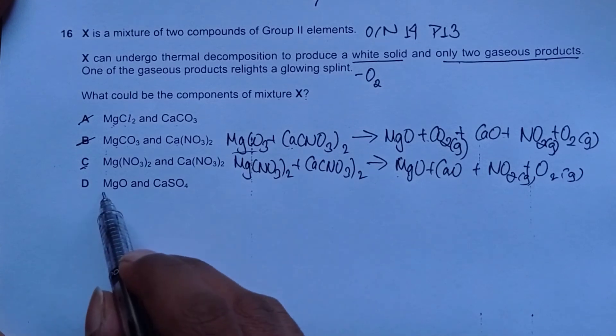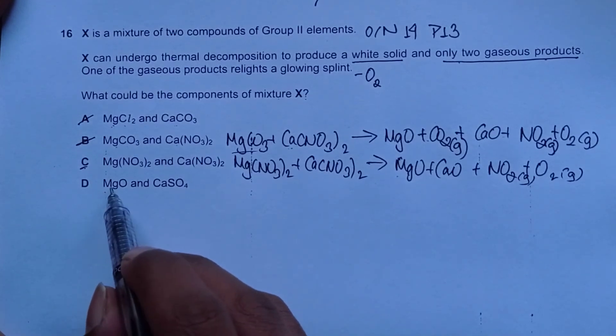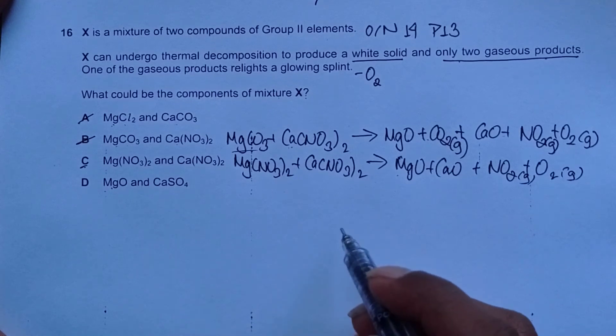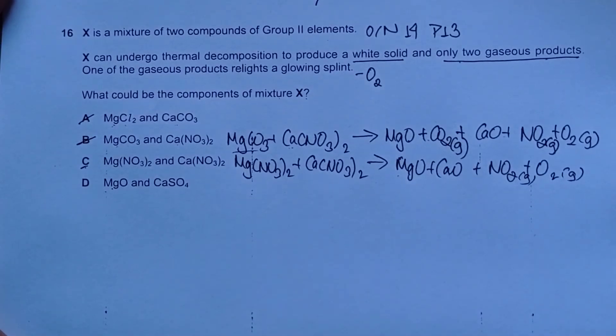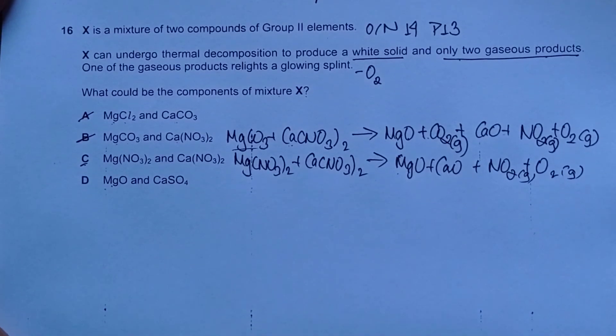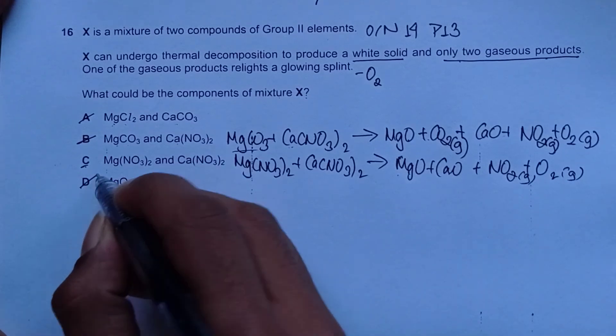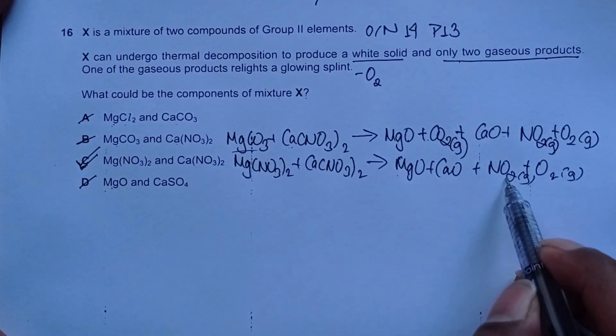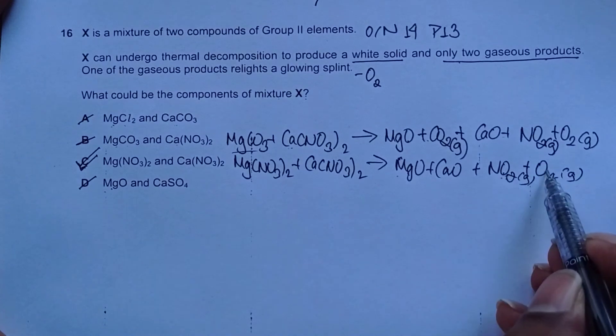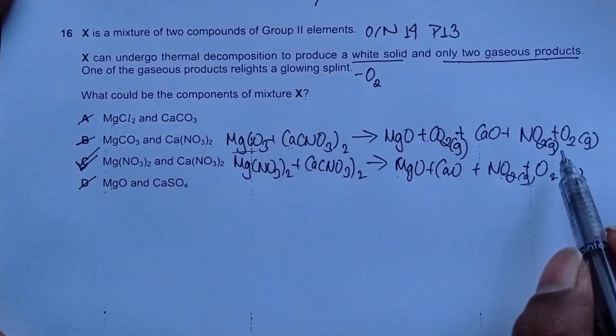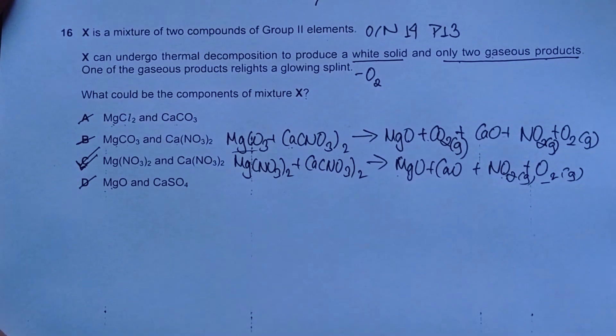But let's verify if D is correct or incorrect. MgO and CaSO4, both of these compounds do not thermally decompose under normal conditions. Choice number D is incorrect which means choice number C must be correct and it gives only two gaseous products and one of the gaseous products which is oxygen relights a glowing splint.